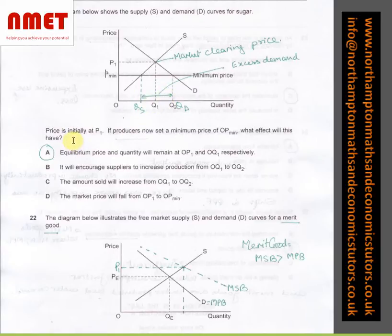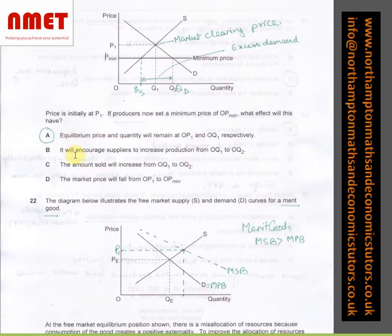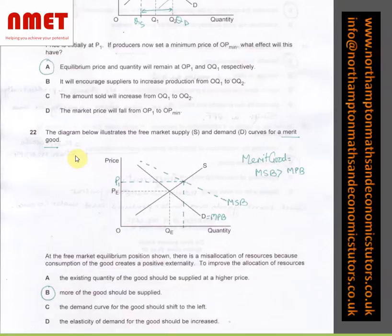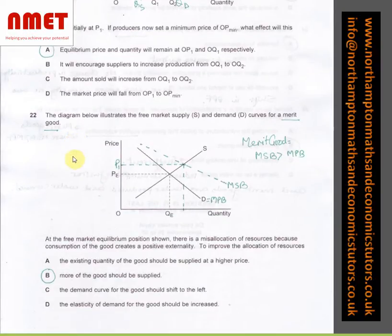The question says price is initially at P1. If producer now sets a minimum price of OP minimum, what effect will this have? Nothing, because the minimum price is below the market price. So supply and demand will still be at P1. So let's have a look at what it says. A. Equilibrium price and quantity will remain at OP1 and OQ1, respectively. As I said, it will not make any difference because the market clearing price is above the minimum price.